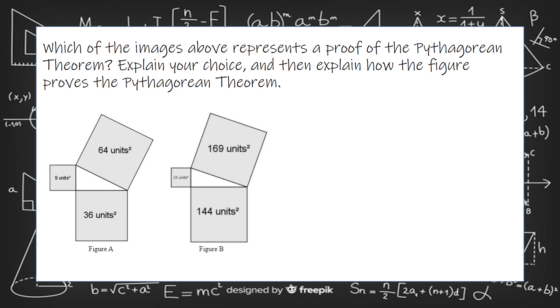Which of the images above represents a proof of the Pythagorean theorem? Explain your choice and then explain how the figure proves the Pythagorean theorem. So I'm going to look for something where a squared plus b squared equals c squared. And they've already done the work of squaring for me. So all I have to do is try these out.